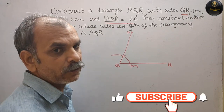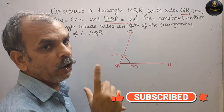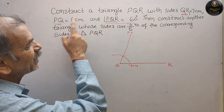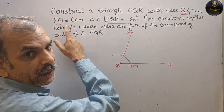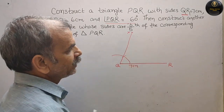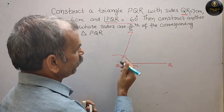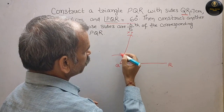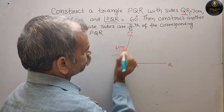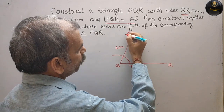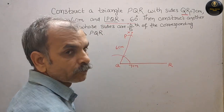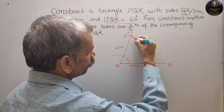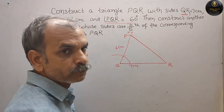अब आपको दूसरा measurement set करना है on compass with the help of a scale — that is 6 cm। PQ दिया है, तो we will cut from Q, 6 cm हम cut करेंगे। तो यह देखो कहाँ पर आएगा — it will come here. तो this is your 6 cm, तो this point is your P.